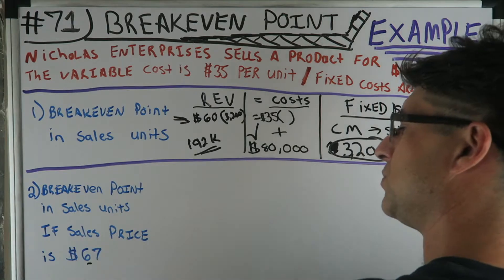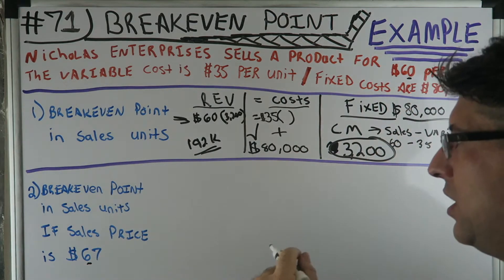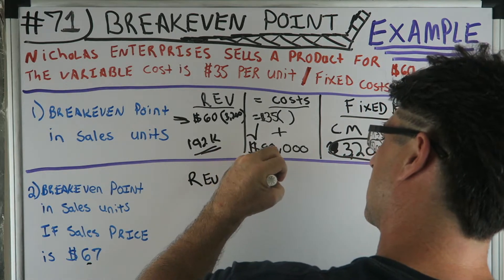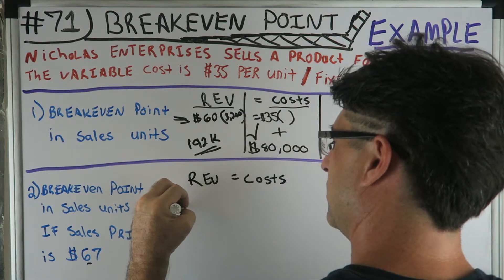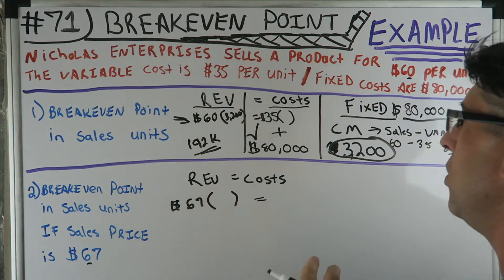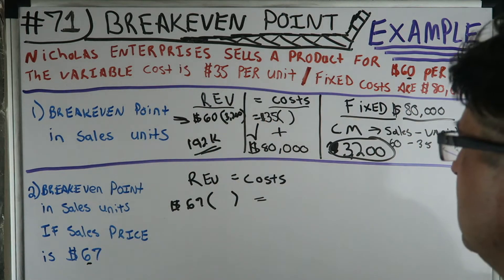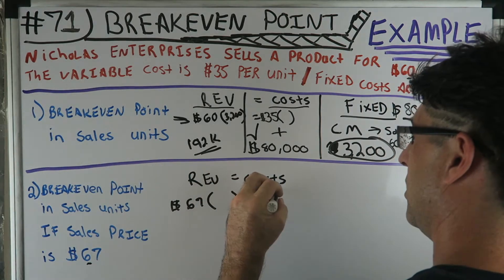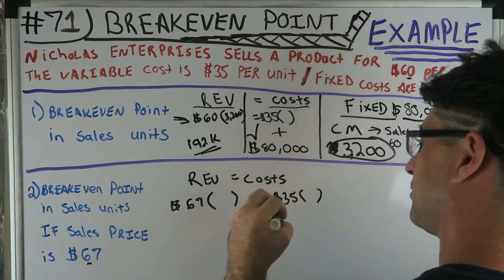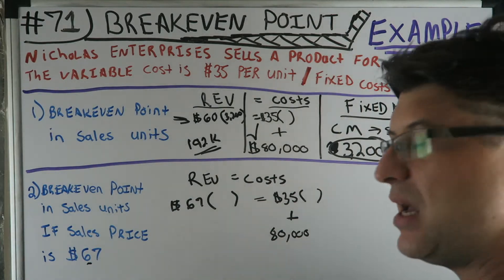For number two, we're going to change the sales price from $60 to $67. Revenue must equal costs. Our revenue is now $67 times however many units we sell to break even. The costs stay the same: $35 variable per unit plus $80,000 fixed. Same facts as before, just a different sales price.